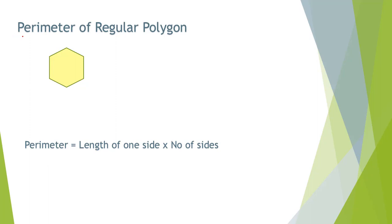Let's calculate perimeter. Perimeter is the length of a boundary. When all sides have the same length, then perimeter is the length of one side times the number of sides, because we have to add the same number six times. If one side of this hexagon is two, then two times six equals twelve.